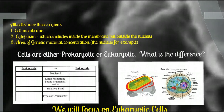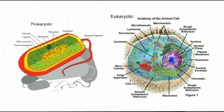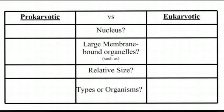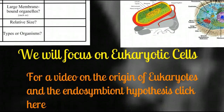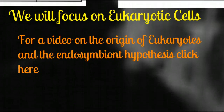Now cells can either be prokaryotic or eukaryotic. As we can see in this diagram, there's a definite increased complexity in the eukaryotic cells. They have a nucleus, which prokaryotes lack, and large membrane-bound organelles that do not exist in prokaryotes. In fact, many prokaryotic cells could fit inside of one eukaryotic cell. In this video, we're going to focus on eukaryotic cells. However, I would like you to review the video on the origin of eukaryotic cells and the endosymbiosis hypothesis — click on the link found here.